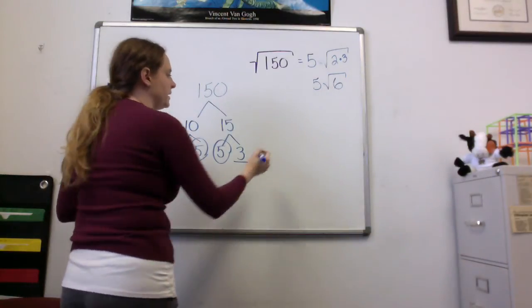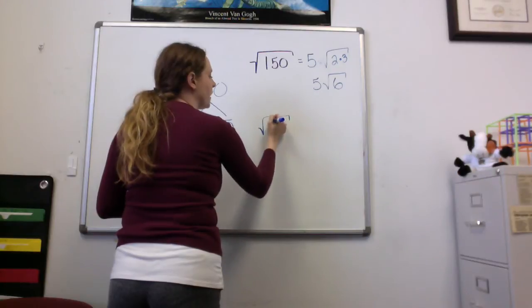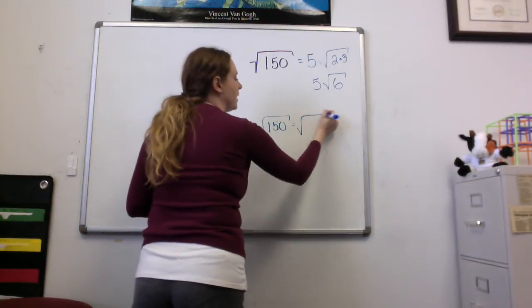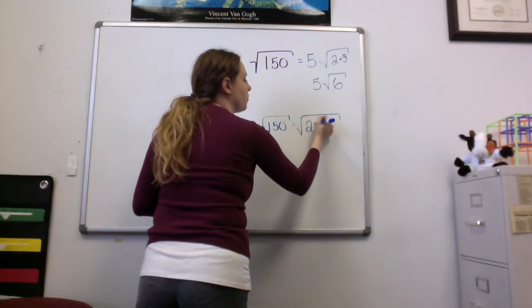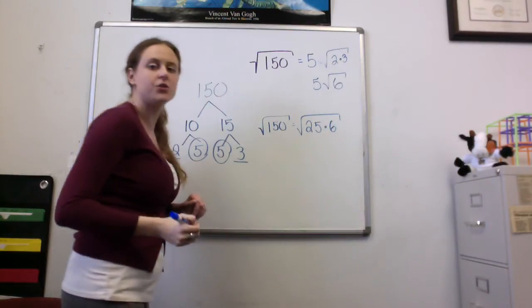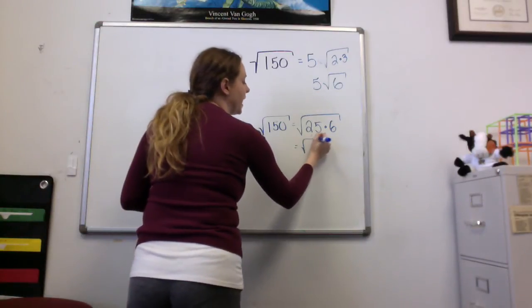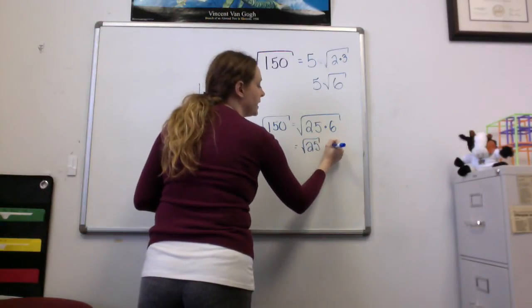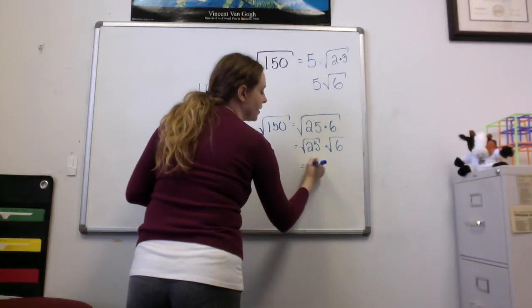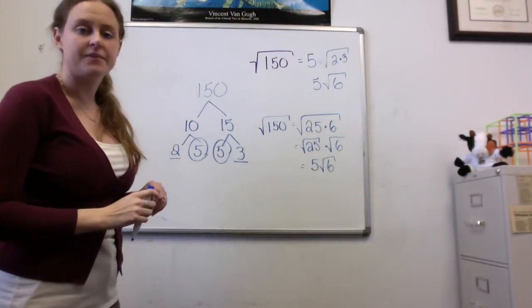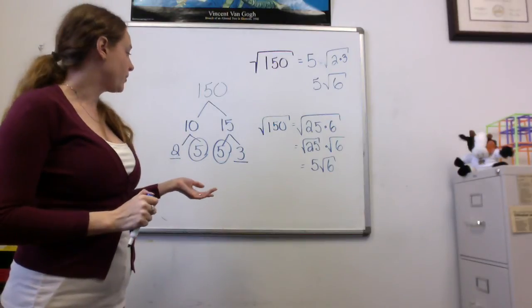Another way to think about this is to say the square root of 150 is the same thing as the square root of 25 times 6, because 25 times 6 is 150. Well, I know what the square root of 25 is. It's a perfect square. So I get 5 square roots of 6. We basically need to find these perfect squares.